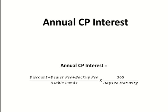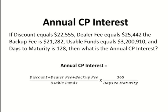That result is then multiplied by 365 days, divided by the days to maturity. Here is an example of a question you're likely to see: if the discount is $22,555, the dealer fee is $25,442, and the backup fee is $21,282, the usable funds are $3,200,910, and the days to maturity are 128, what is the annual CP interest rate?